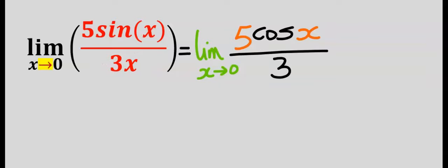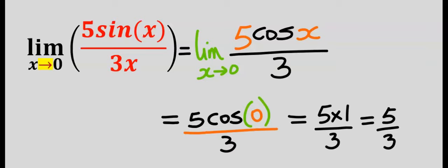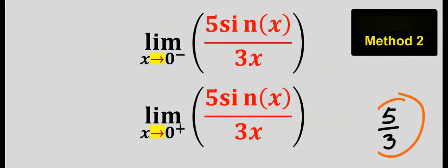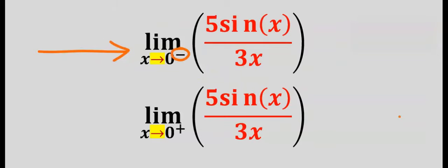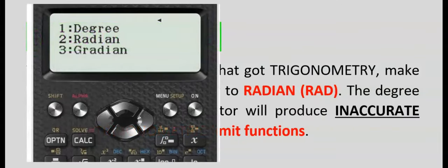That is, substitute zero for x and your answer is five over three. Let's solve this problem by approaching this limit from the left and approaching this limit from the right. If you must work with your calculator at this stage, you have to set it to radian, else you will get inaccurate results.